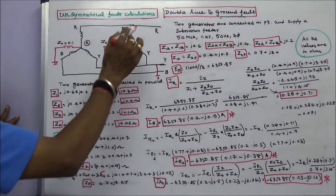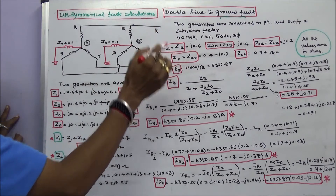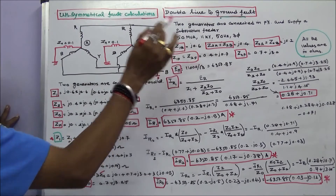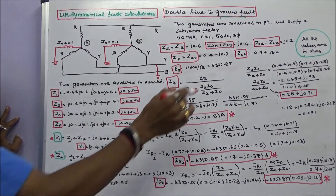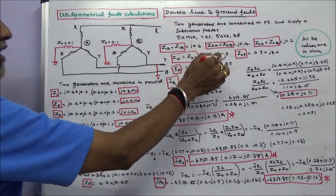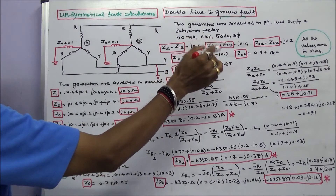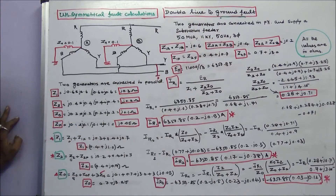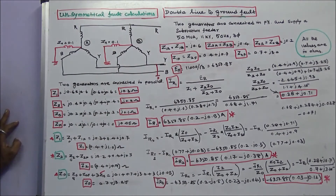The feeder positive sequence impedance equals the negative sequence impedance, which equals 0.4 plus J0.7 ohms. The zero sequence impedance of the feeder is 0.7 plus J0.3 ohms. All values are in ohms.